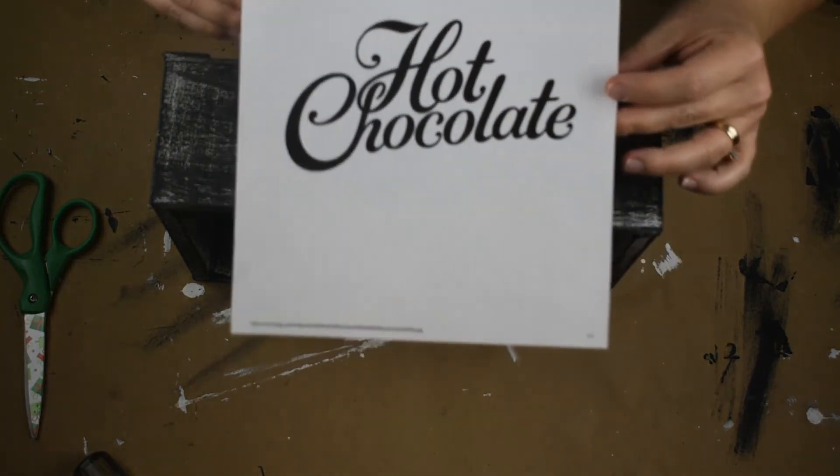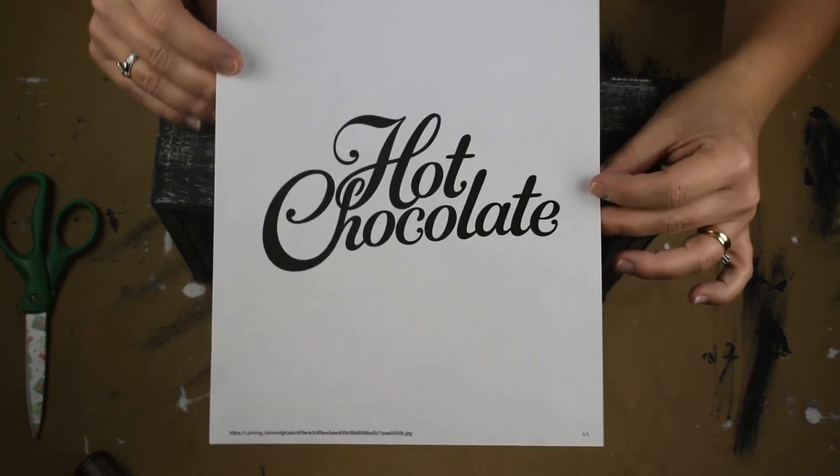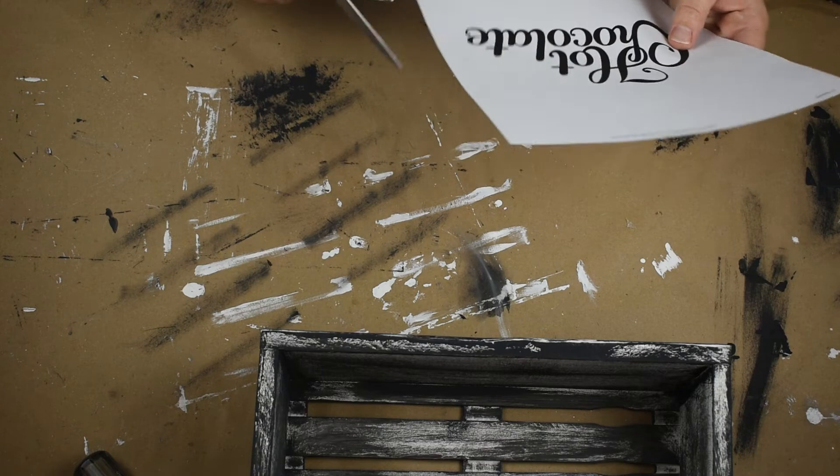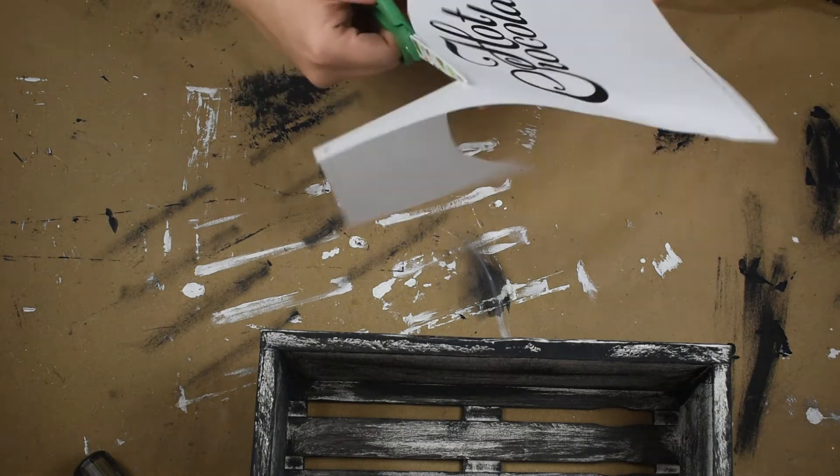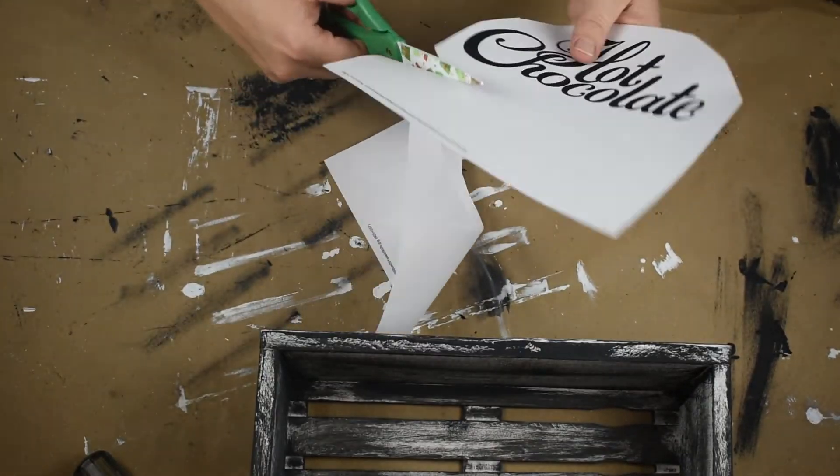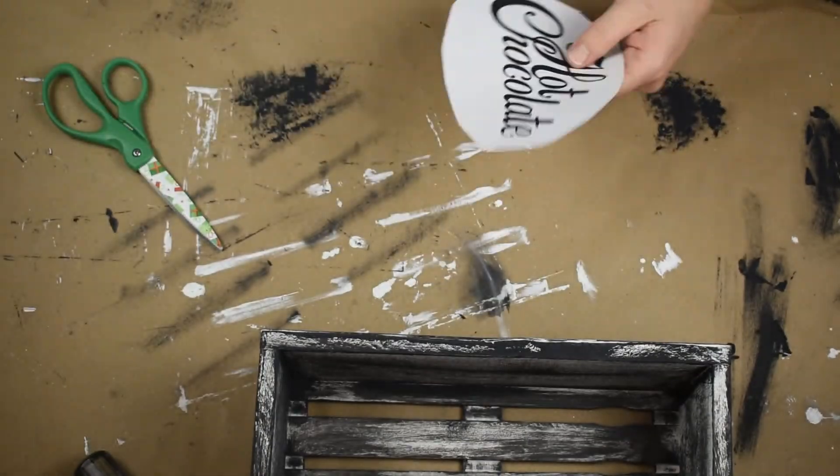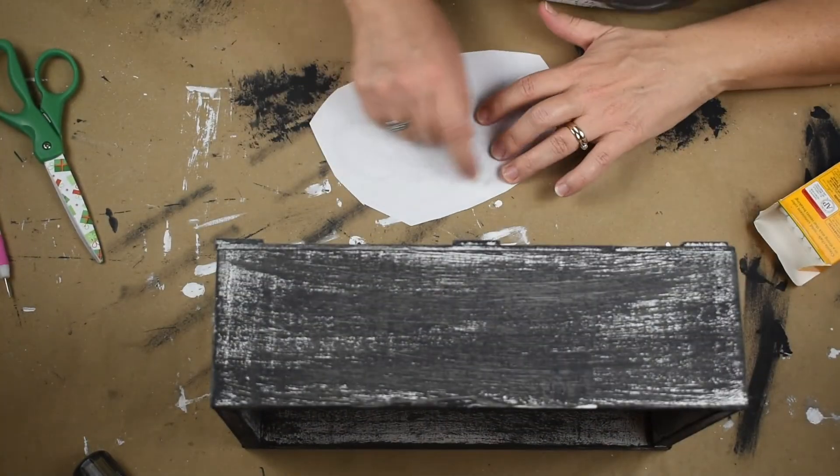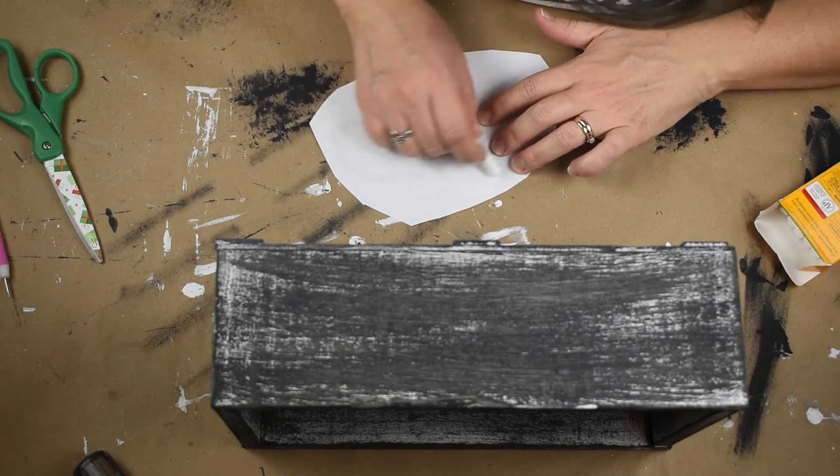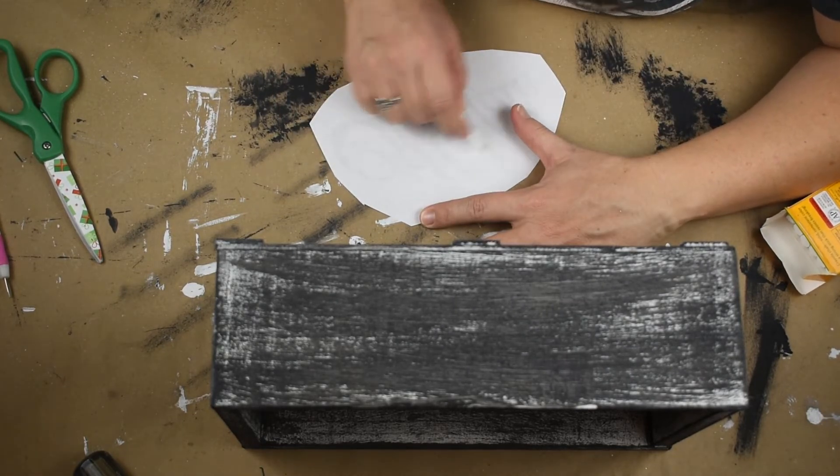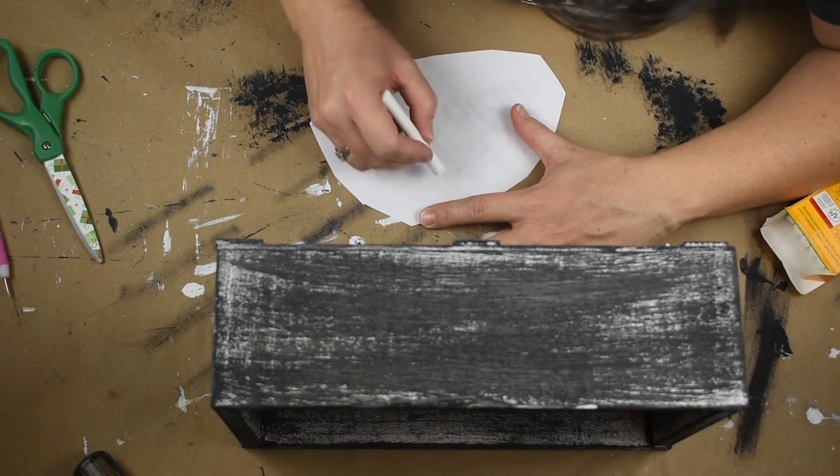So now moving on to this printable. I had just gotten on Google Images and I typed in hot chocolate font and this is what came out. And so I just printed it up on just regular computer paper, no big deal. I just cut it out just a little bit so that it was just a little easier to work with. And I'm just doing the transfer technique where, since I'm trying to apply this on a darker surface, I'm using the chalk, going over my word on the back with the chalk.